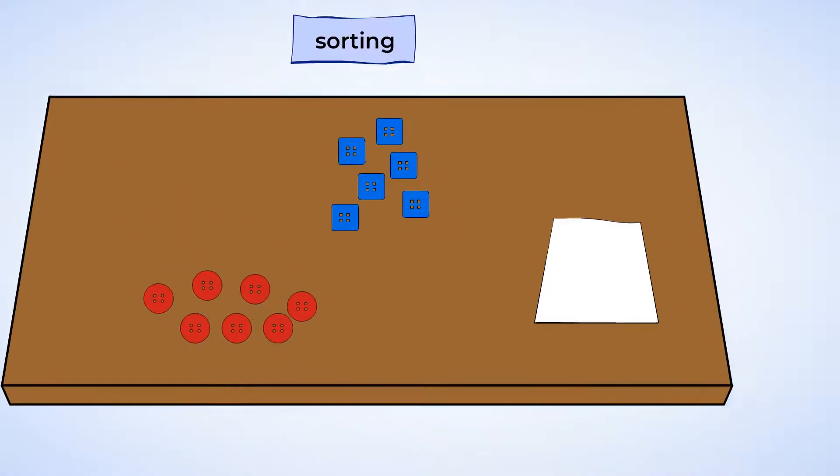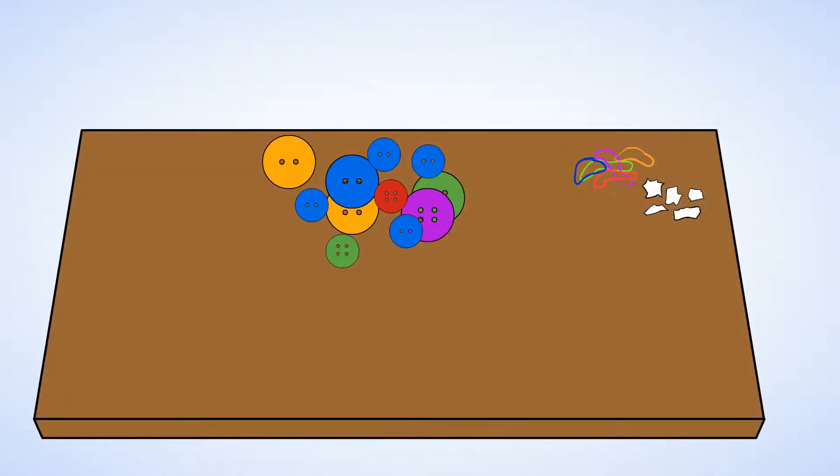And it looks like Sue is making an arts and crafts project too. She's using buttons of all different colors. It's like a rainbow. Sue wants to use only big buttons for one picture and only small buttons for another picture.